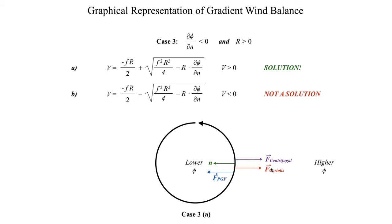This actually could be a force balance — the pressure gradient force could be equal and opposite to the combination of Coriolis and centrifugal force. Unlike case one, where it was a very lopsided tug of war, this has an opportunity to actually be an even fight. The pressure gradient force does actually have the chance to balance the centrifugal and Coriolis forces, because we do have forces pointing in opposite directions.